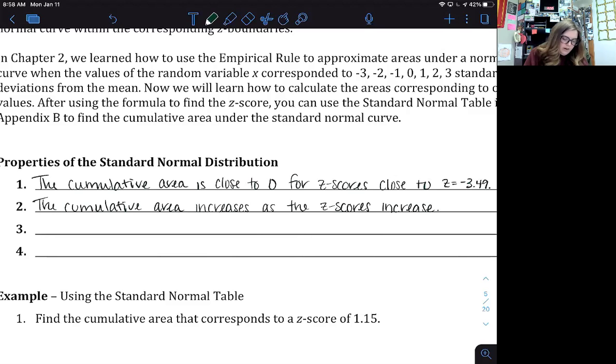The cumulative area at z equals zero is 0.500. Okay, because remember z equals zero is when it's the mean, and that represents the midpoint of our normal curve.